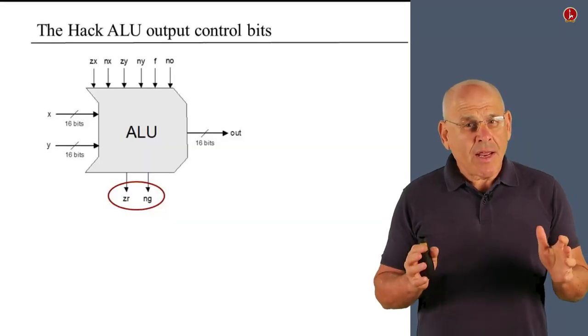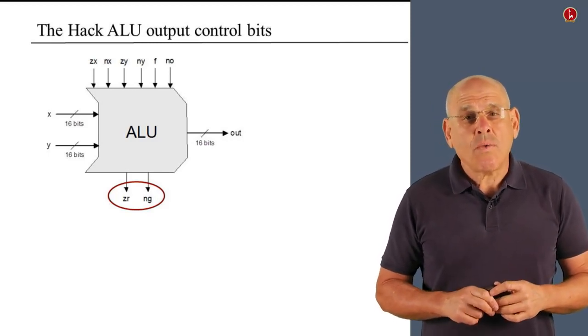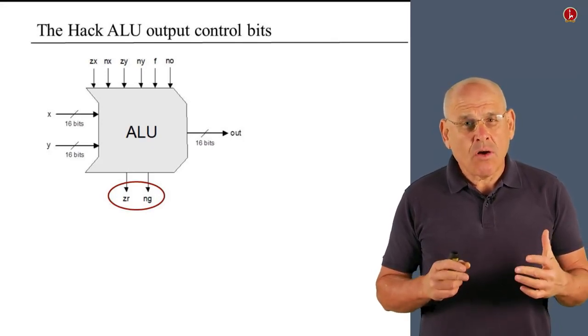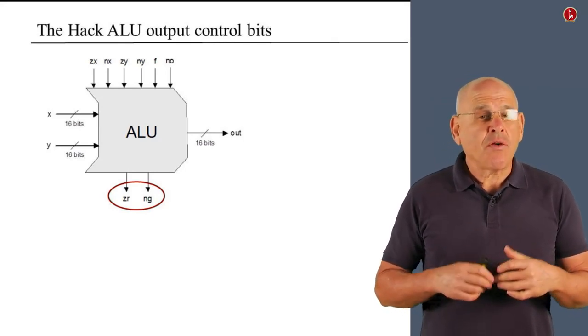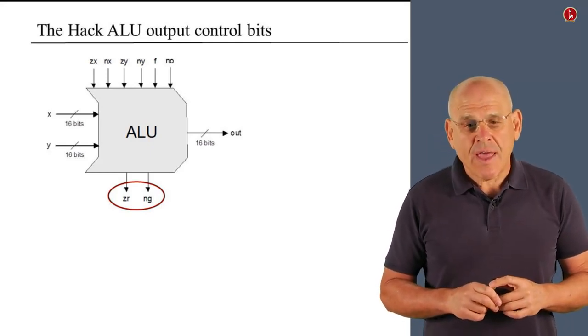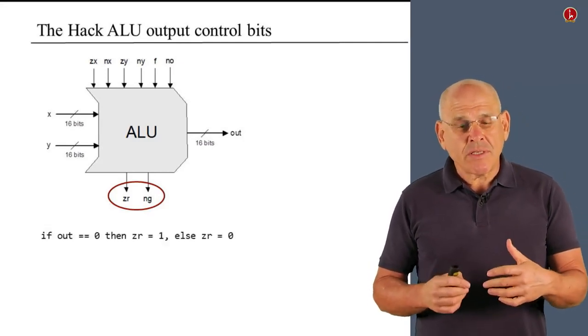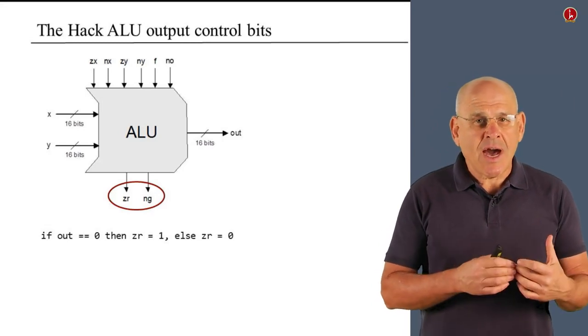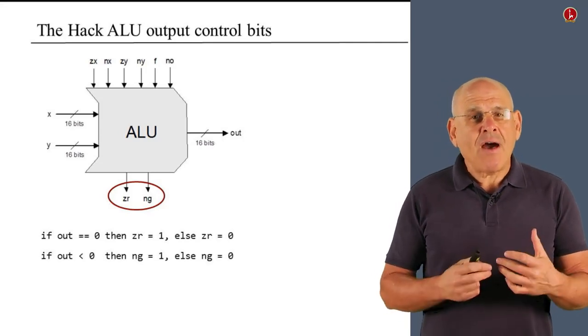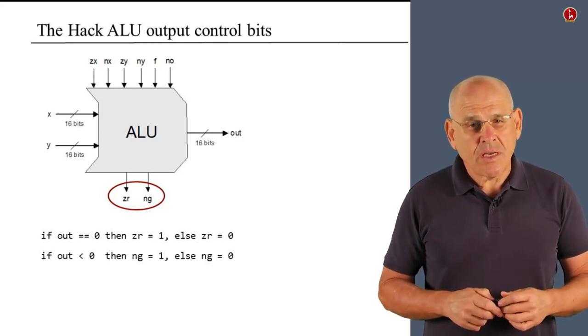Now, as we said earlier in the unit, the ALU also computes and outputs two one bit output control bits. And these bits are called ZR and NG. And the role of these bits is to say something about the main output of the ALU denoted out. Specifically, if out equals zero, the ALU sets ZR to one. Otherwise, ZR becomes zero. And if out is negative, then NG equals one. Otherwise, NG equals zero.